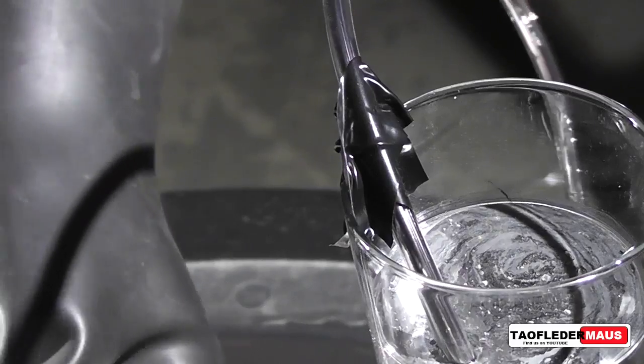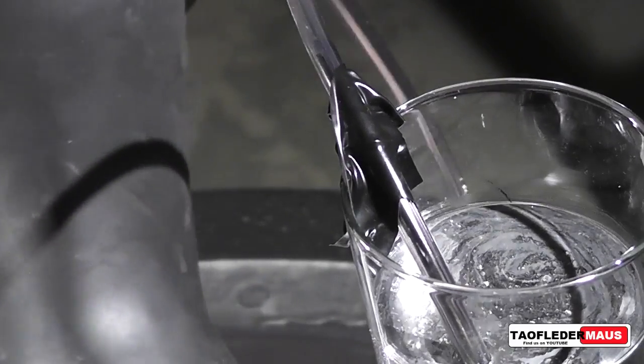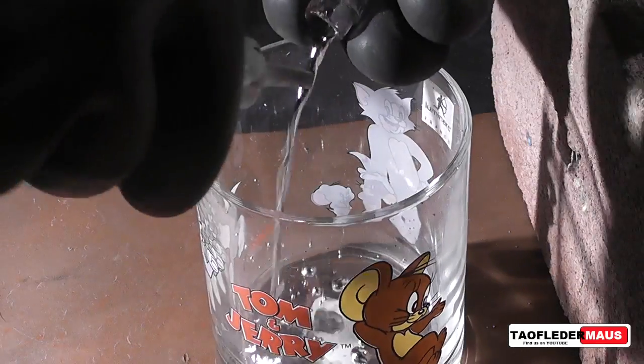I couldn't keep the hose submerged in the dense mercury, it wanted to float so I just used some tape to secure it.